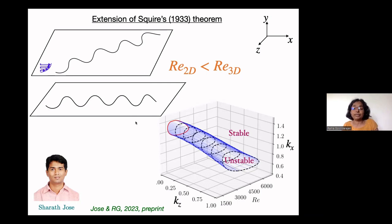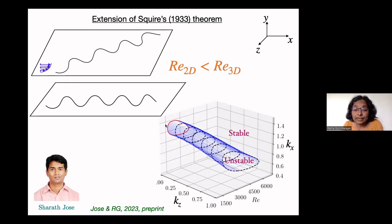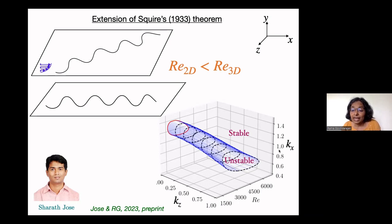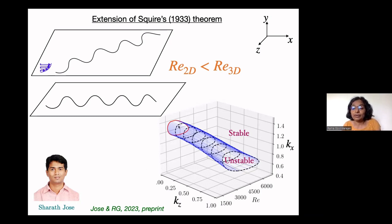We can make a one-to-one correspondence between every 3D wave and its corresponding 2D wave. So we can solve only the 2D problem — set the third dimension to zero — and this holds for exponential instabilities. The neutral boundary in two dimensions at beta equal to zero shows the unstable region in the Reynolds number and streamwise wave number space. Using the transformation, we can find the entire cylinder of instability in the third direction for all oblique waves.